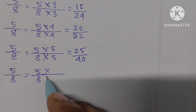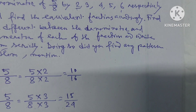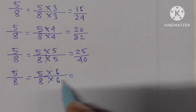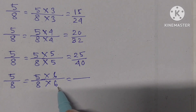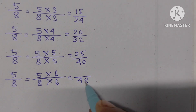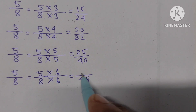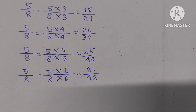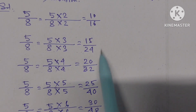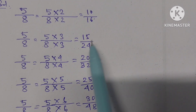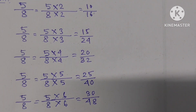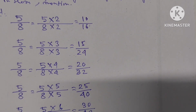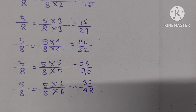Then, we have to multiply by 6. 6 times 5 is 30, 6 times 8 is 48. So the equivalent fraction is 30 by 48. We have found the equivalent fractions of 5 by 8 by multiplying both numerator and denominator by 2, 3, 4, 5, and 6 respectively.